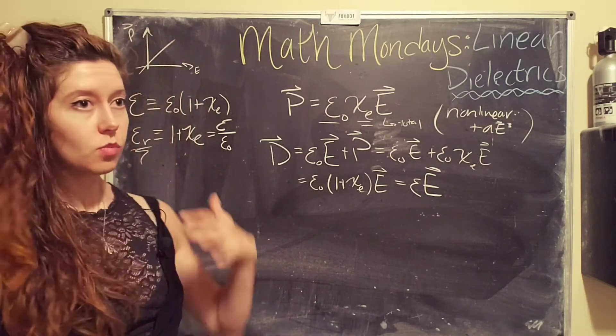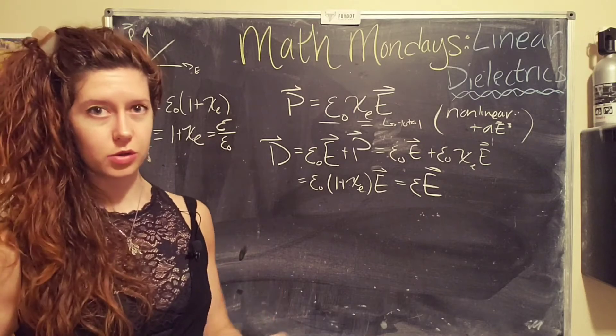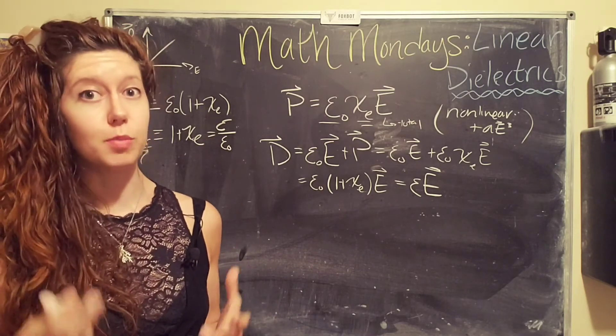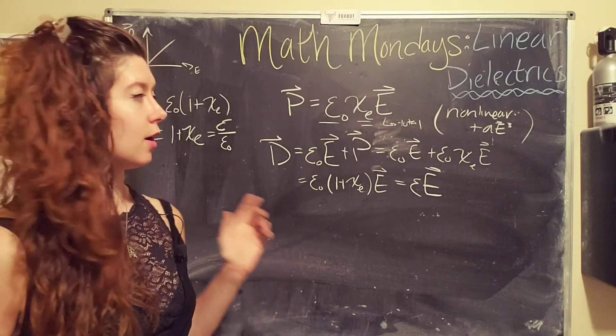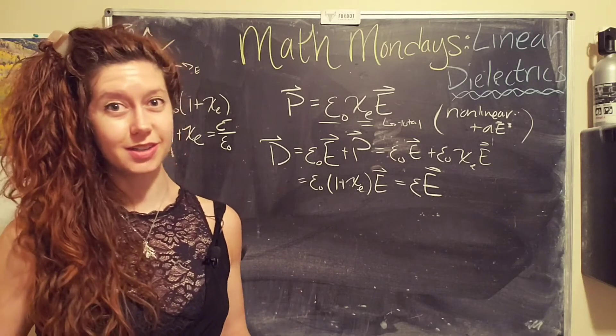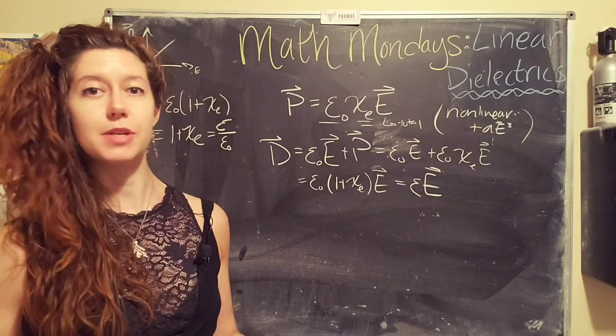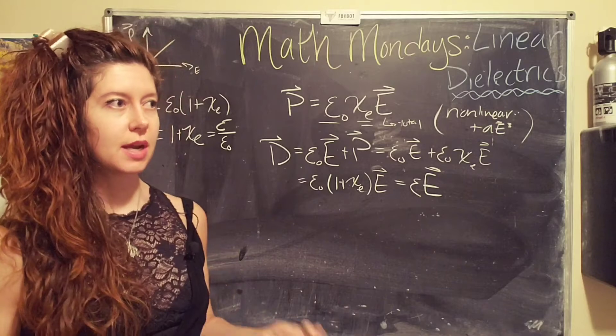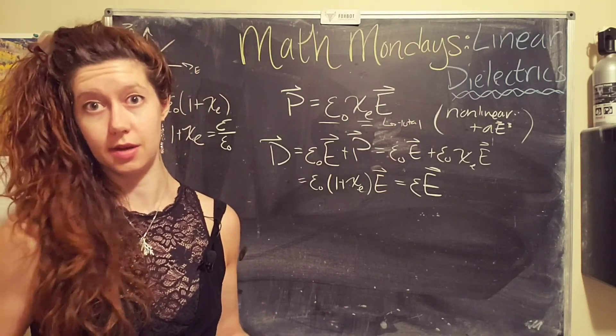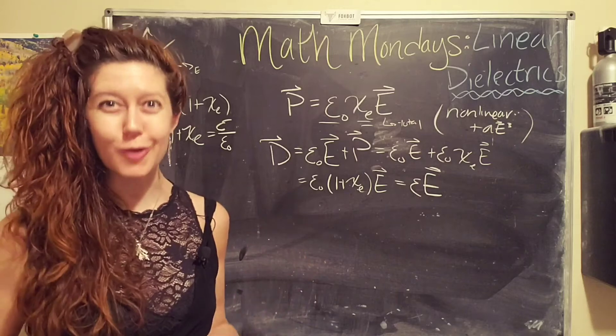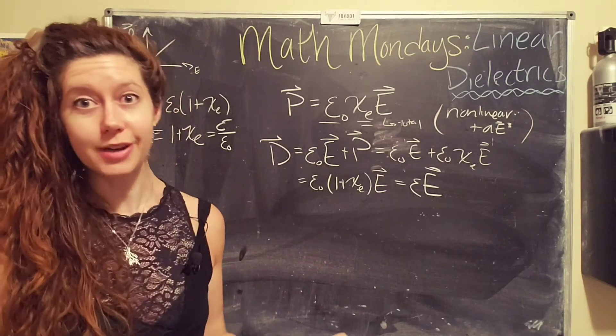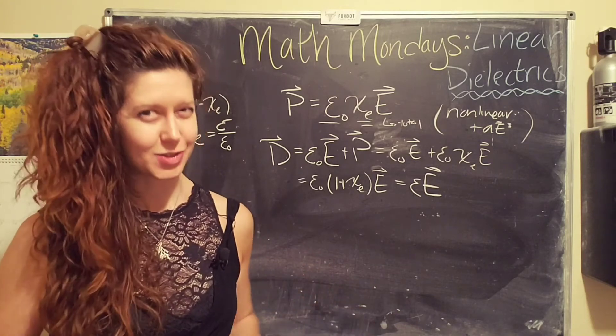So again, the relative permittivity or the dielectric constant is a property of the material. So materials that can be polarized more have a higher dielectric constant than materials that can't really be polarized. And it's actually kind of related to how well that material can conduct electricity. So water, for example, has a much higher dielectric than air and soil.